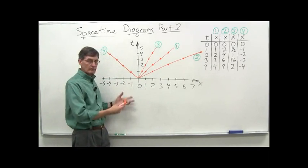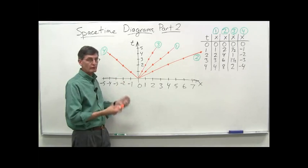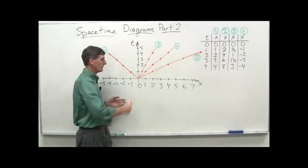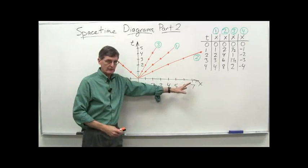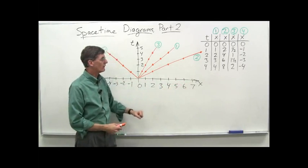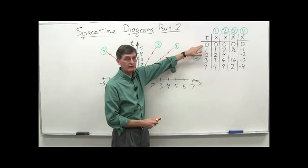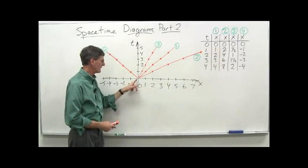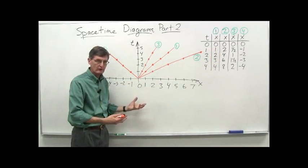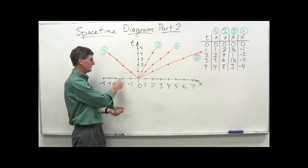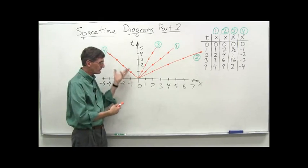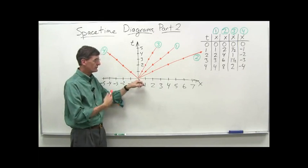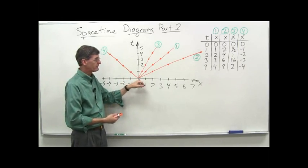We're going to imagine four trips — four passes or four runs of our spaceship along the x-axis. All of them will start at t equals zero and x equals zero, so they'll all be starting at the origin.